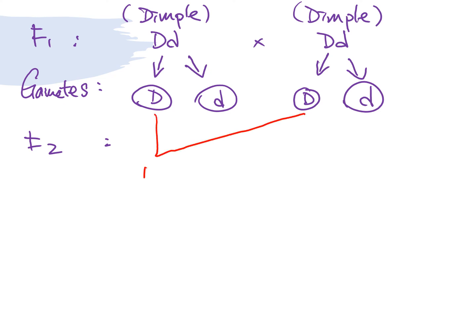This is one possibility, big D, big D. Another possibility, big D, small d. Another possibility, big D, small d. The final possibility, small d, small d.